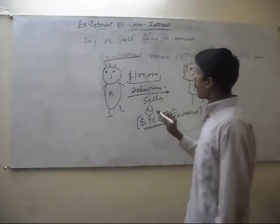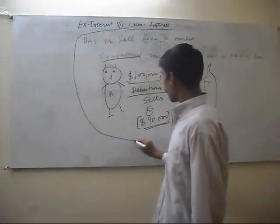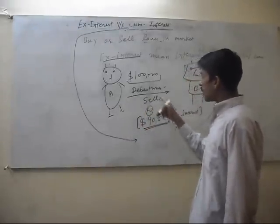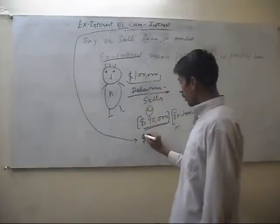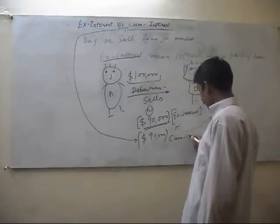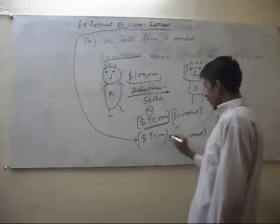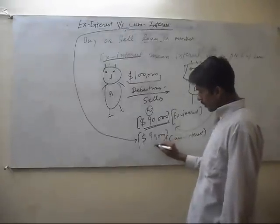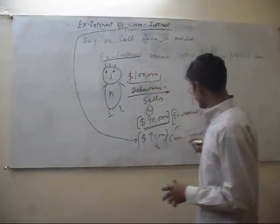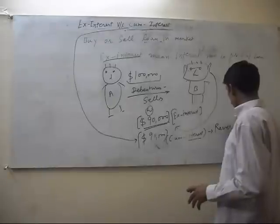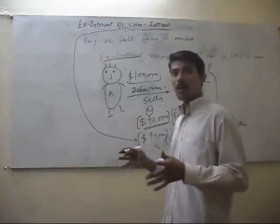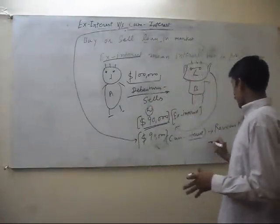But in Cum Interest, if A sells debentures at $90,000 with Cum Interest, it means interest is included in this $90,000. Because interest is a revenue item, and purchasing or selling of debentures is a capital item,